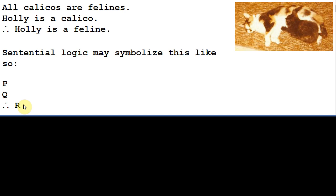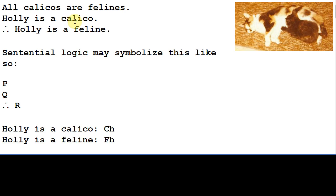But let's begin by just symbolizing the two lines Holly is a calico and Holly is a feline. We symbolize Holly is a calico as capital C lowercase h, and we symbolize Holly is a feline as capital F lowercase h. And here the capital letters are standing in for predicates, and the lowercase letters are representing subjects. So a standard English sentence has a predicate and a subject, and so we're separating out the predicate and the subject of a sentence with separate symbols and combining them together to create a symbol representing the entire sentence.